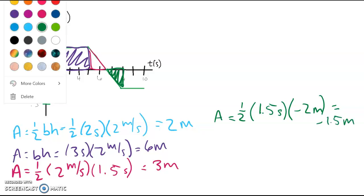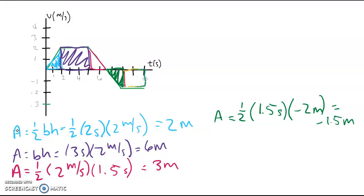And then our final region, what color should I use here? Oh, let's go with rainbow. Oh, isn't that fun? So that region there. So that area is going to be, well, it's a rectangle, so that's just base times height. So that's going to be 2 seconds multiplied by our negative 2 meters per second. I just realized up here I did the wrong units. I forgot the per second there. Nonetheless, this ends up being negative 4 meters.